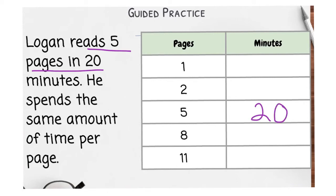So then from there we are going to problem solve what would it be for him to read one page, two pages, eight pages and 11. So the first thing I would do is go down to one page because I know that five divided by five is one. So I do the same thing to this side. 20 divided by five is four.